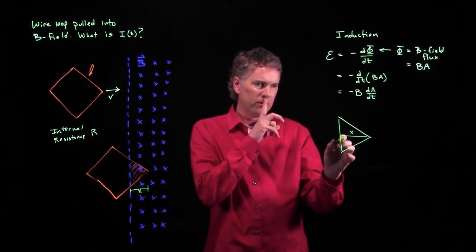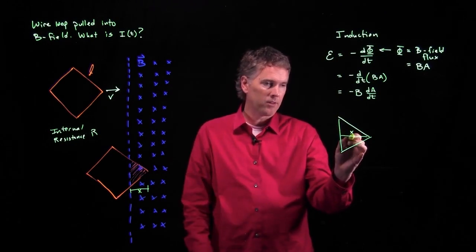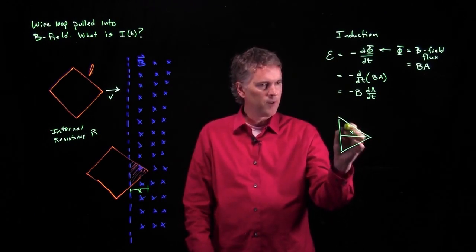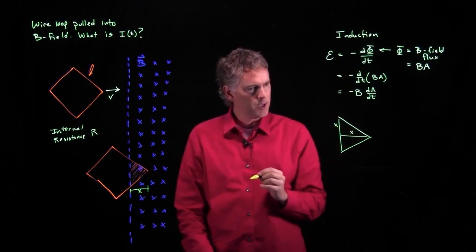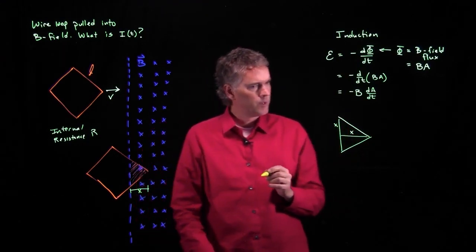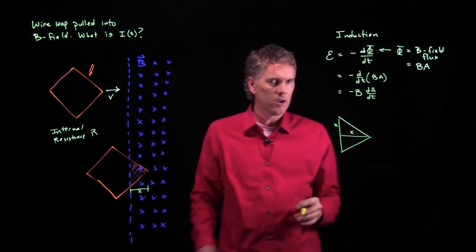And now, by symmetry, you can see, well, if that's X, I know this thing is a 45-45-90 triangle, this side right here has to be X.